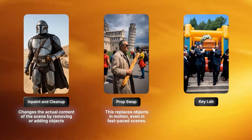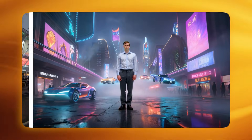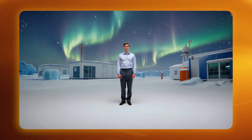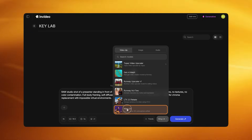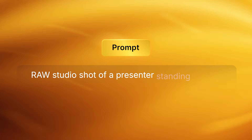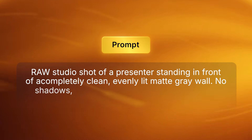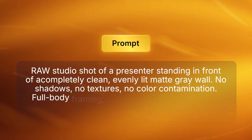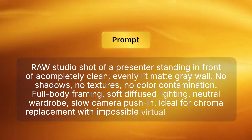Now let's get into the next one called KeyLab. This handles background replacement. KeyLab allows you to record against any plain wall and instantly transport your subject into fantasy environments, futuristic cities, harsh weather or space scenes. It preserves the original actor's movement, expression and timing. For this I used Kling 2.6 as my base model. In the prompt field I wrote: "Raw studio shot of a presenter standing in front of a completely clean, evenly lit matte gray wall. No shadows, no textures, no color contamination. Full body framing, soft diffuse lighting, neutral wardrobe, slow camera push in." Click Generate.